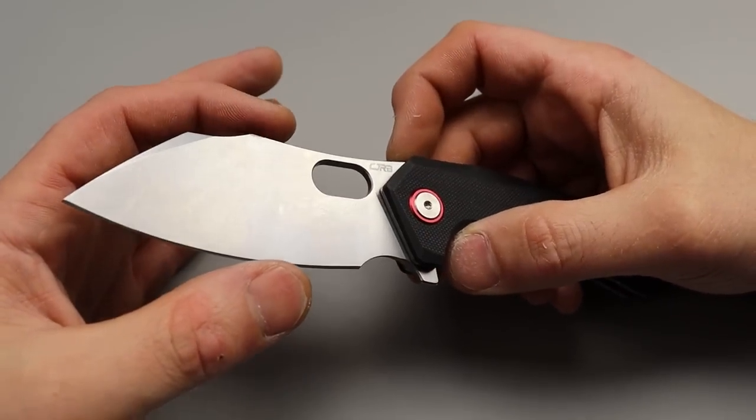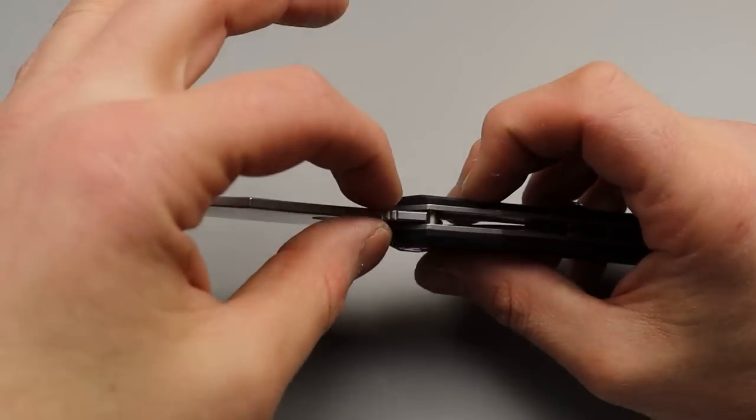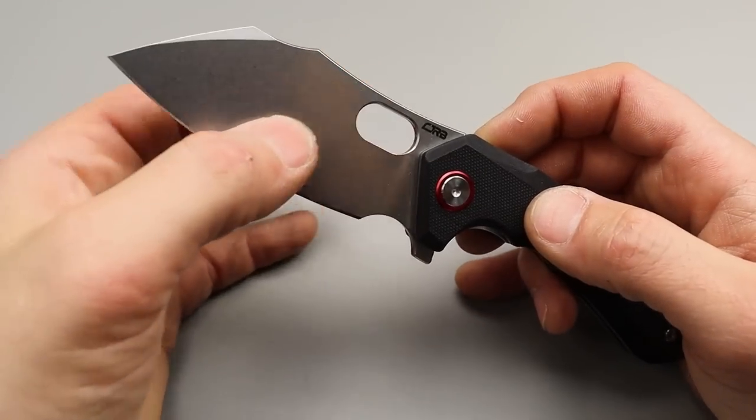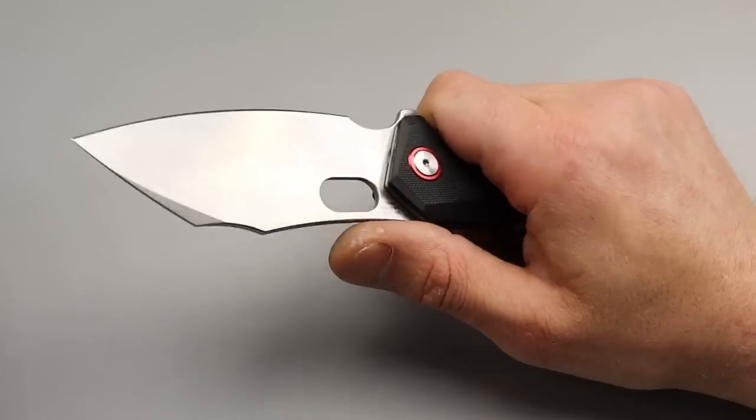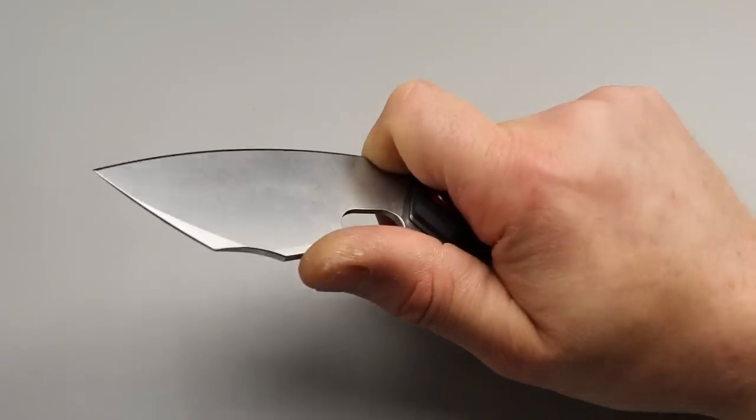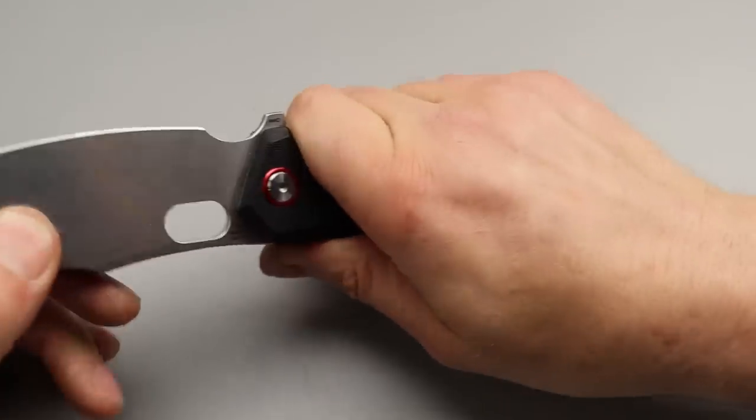It has very thin geometry. This thing is an amazing slicer. Not only does it have a very broad blade, but it has a nice thin blade stock and it gets down nice and thin behind the edge. This thing slices like a beast. It has a nice appropriate size choil and good ergos back here.